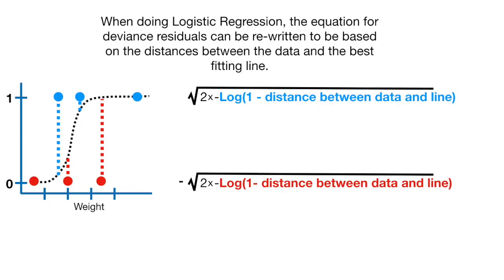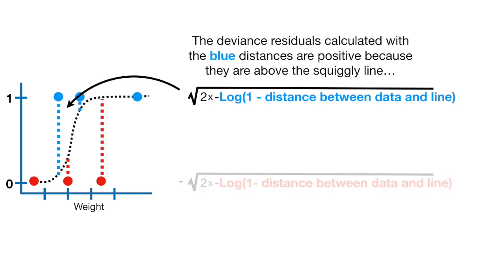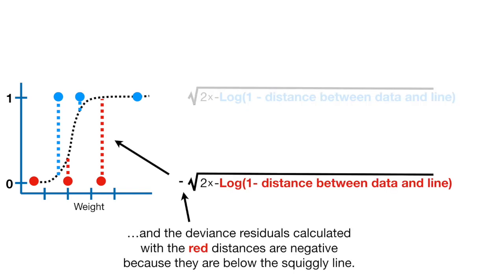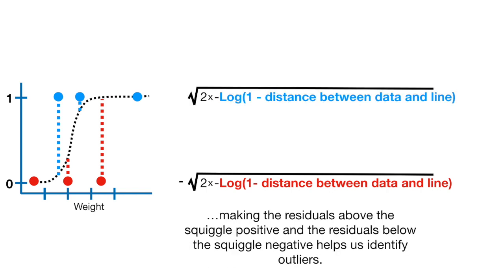When doing logistic regression, the equation for deviance residuals can be rewritten to be based on the distances between the data and the best-fitting line. The blue deviance residuals calculated with the blue distances are positive because they are above the squiggly line. And the deviance residuals calculated with the red distances are negative because they are below the squiggly line. Making the residuals above the squiggle positive and the residuals below the squiggle negative helps us identify outliers.